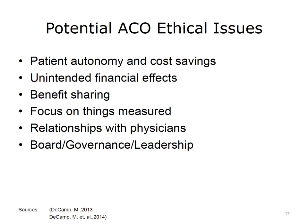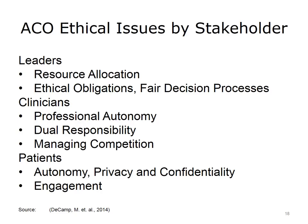There is also a risk that in focusing on specific quality measures, less attention will be given to other aspects of quality care that are not part of the required metrics. ACOs will undoubtedly raise new questions about relationships, what to focus on when Medicare requires 33 different quality of care measures, and how benefits—that is, savings—are distributed among providers. Strong leadership and governance will be necessary to ensure appropriate responses to these and other ethical issues that may arise as ACOs are implemented fully.